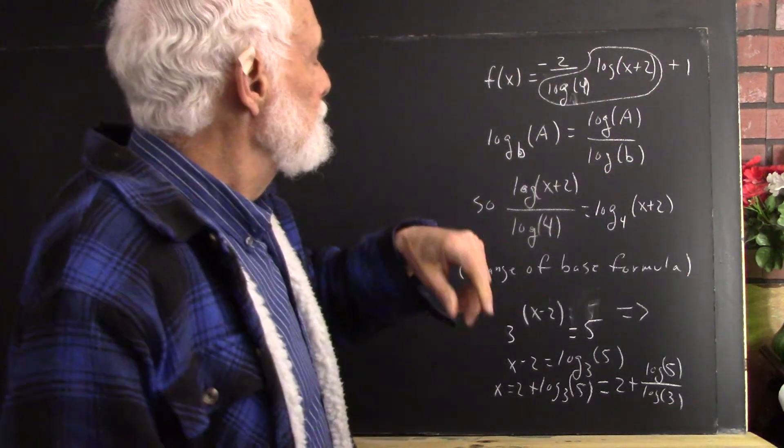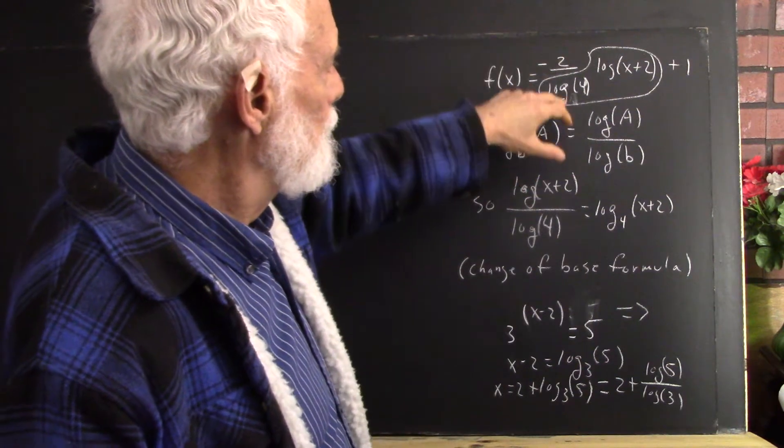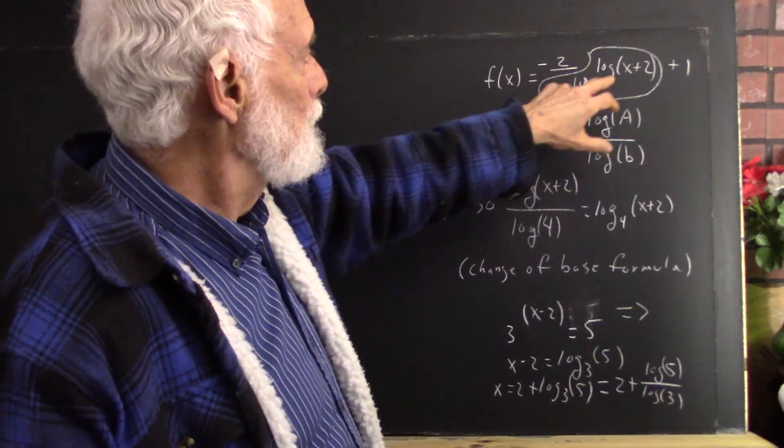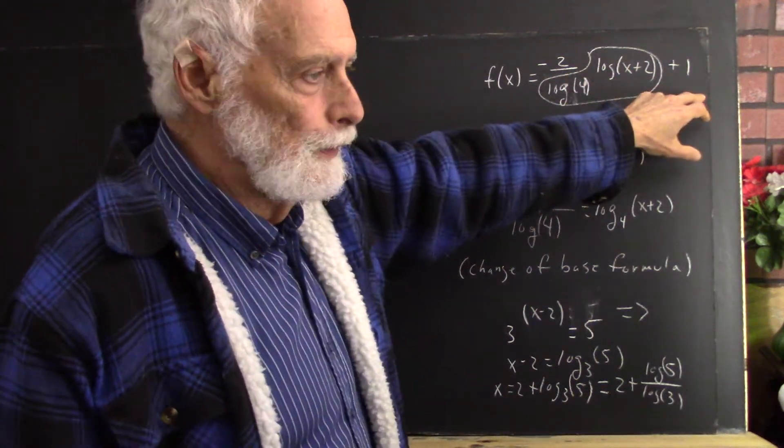Just for the record, you have f of x is negative 2 over log base 4 times the log of x plus 2 plus 1.